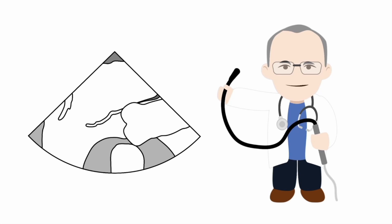In this view, we have the left atrium in the near field, the mitral valve with anterior and posterior leaflets, the left ventricle, the left ventricular outflow tract, the aortic valve and aortic root, together with a portion of the right ventricular outflow tract.